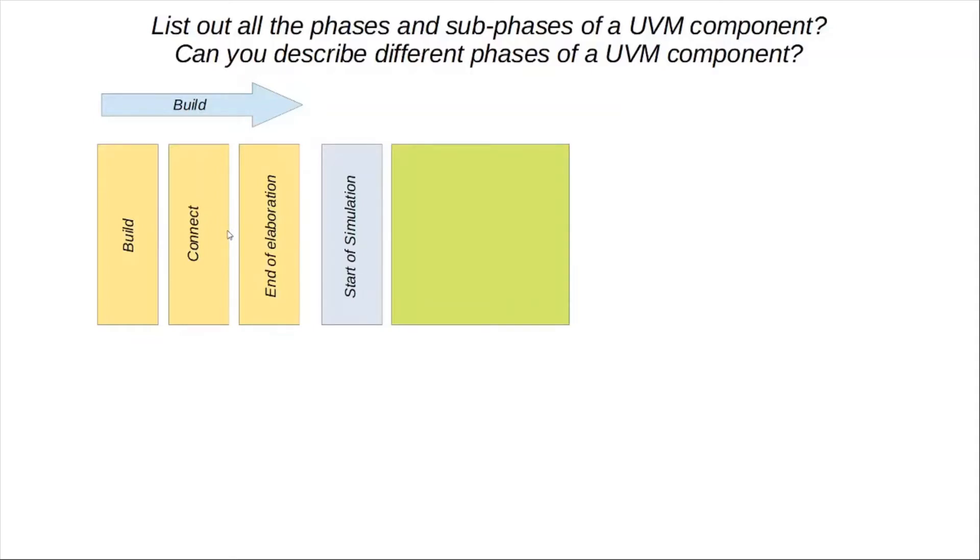Next is the run phase. Once we are done with the start of simulation phase, we reach the run phase. This is a time-consuming phase and that is why it is called a task, not a function, because functions cannot be time-consuming. The important distinction here is that the run phases execute in a parallel fashion for all the components in the test bench. Mainly the stimulus is generated in this phase and all kinds of test bench requests and responses are monitored. There are also 12 sub run phases which we'll discuss in more detail shortly.